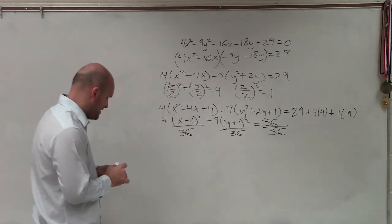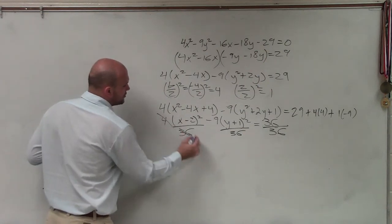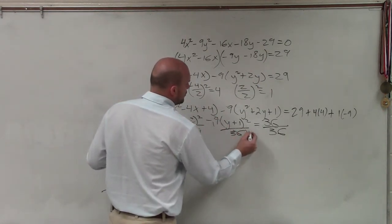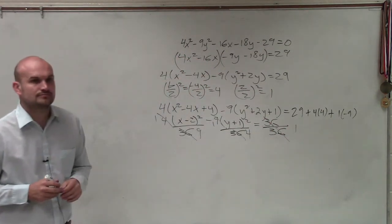So when dividing everything by 36, this reduces to 1 ninth. This reduces down to 1 fourth. That goes down to 1.